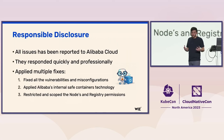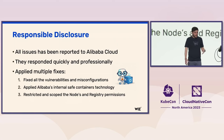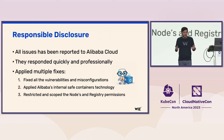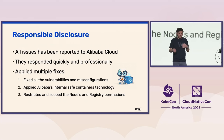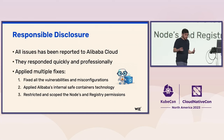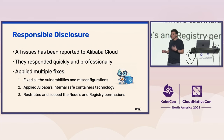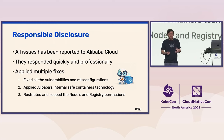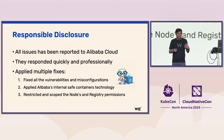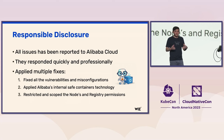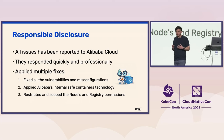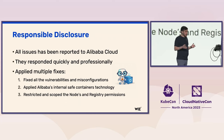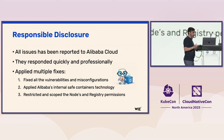Those are the vulnerabilities we found in both PostgreSQL services on Alibaba Cloud. We reported all of them to Alibaba. They responded very professionally and applied multiple fixes: they fixed all the vulnerabilities and misconfigurations, created a new internally developed safe container technology similar to Google's gVisor, applied it to harden those containers, and restricted and scoped the node's service account permissions within the Kubernetes cluster as well as the container registry permissions so people won't have write access anymore.